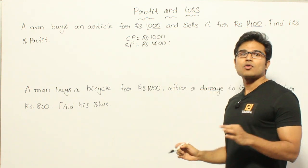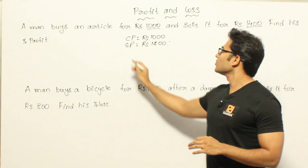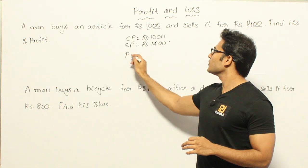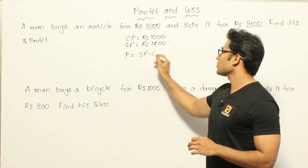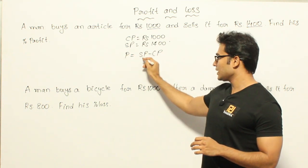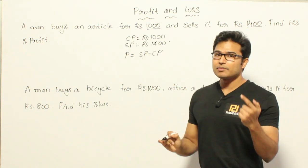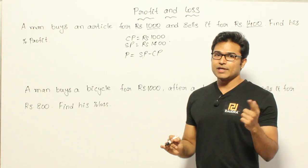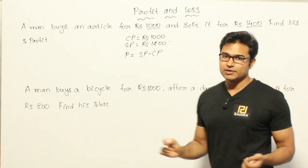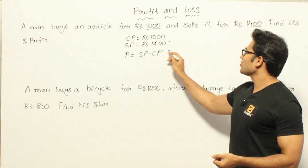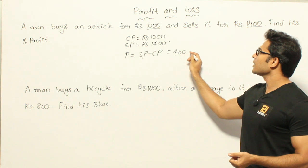Now what is the profit he made? Profit is always selling price minus cost price in case selling price is higher. In case it is lower, it is going to be a loss. Therefore profit is going to be 400.